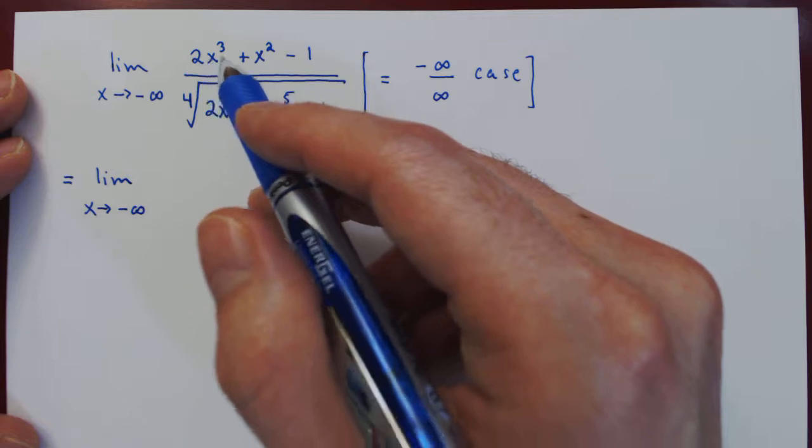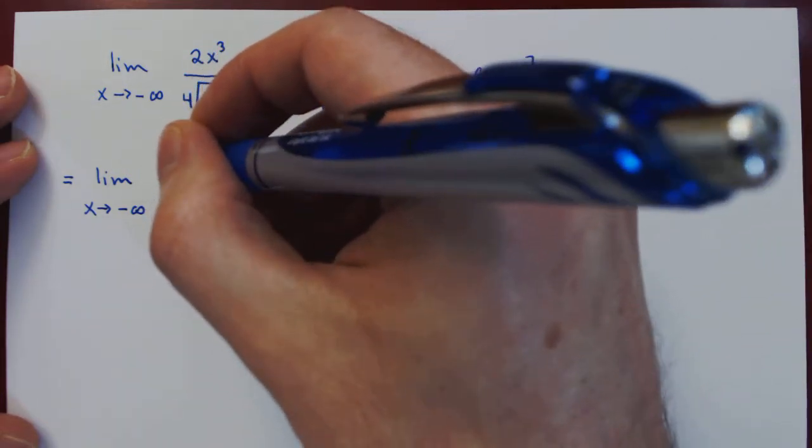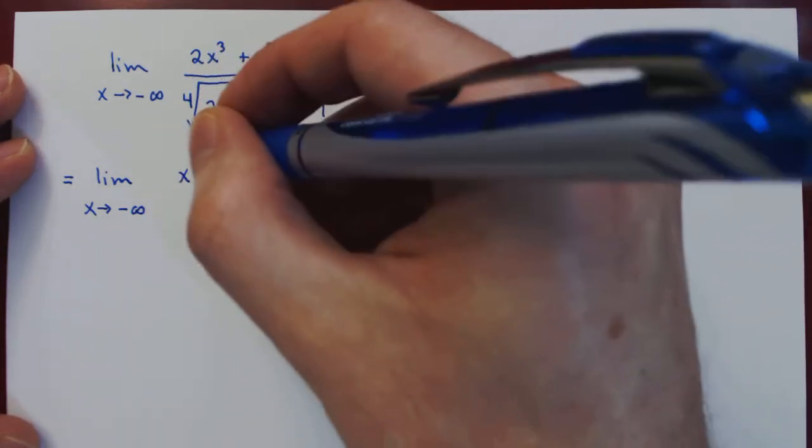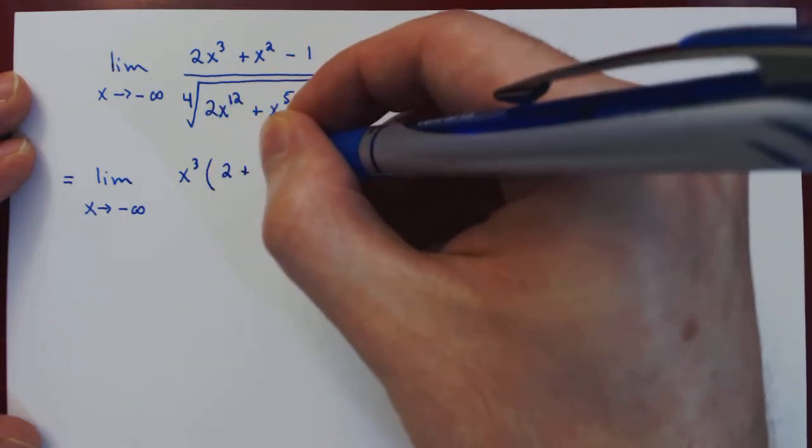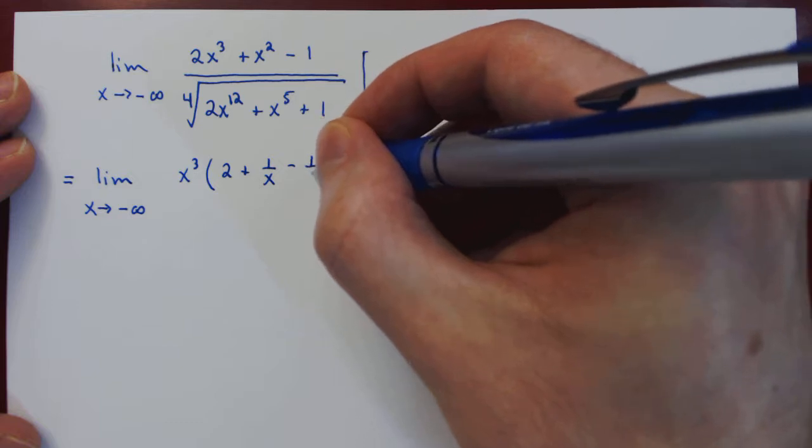On the numerator, the largest term is x³, so we factor it, and we're left with 2 plus 1/x minus 1/x³.